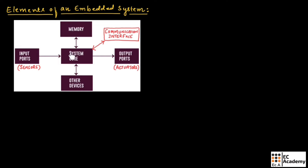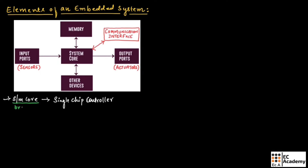It consists of a system core, which can be a single chip microcontroller or a microprocessor. This system core will act as the brain of the system. The system core can be a microprocessor, microcontroller, programmable field gate array which is FPGA, or a digital signal processor which is DSP.